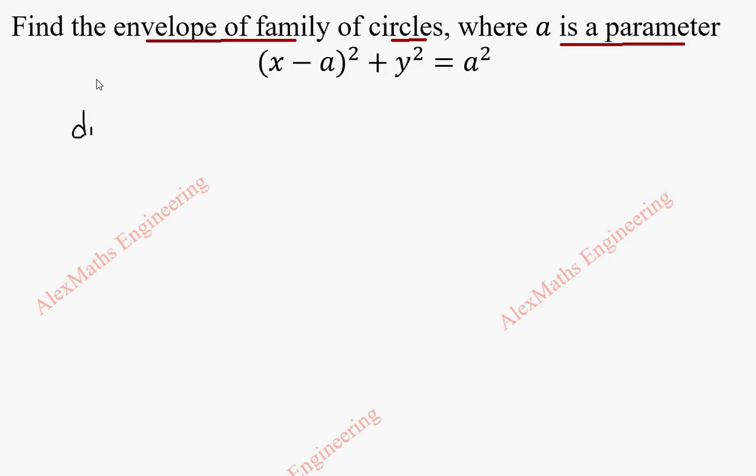As a first part, we have to differentiate the given curve with respect to the parameter. So here it is differentiating with respect to a. And after differentiation, we have to find a and substitute in the circle equation to get the envelope.